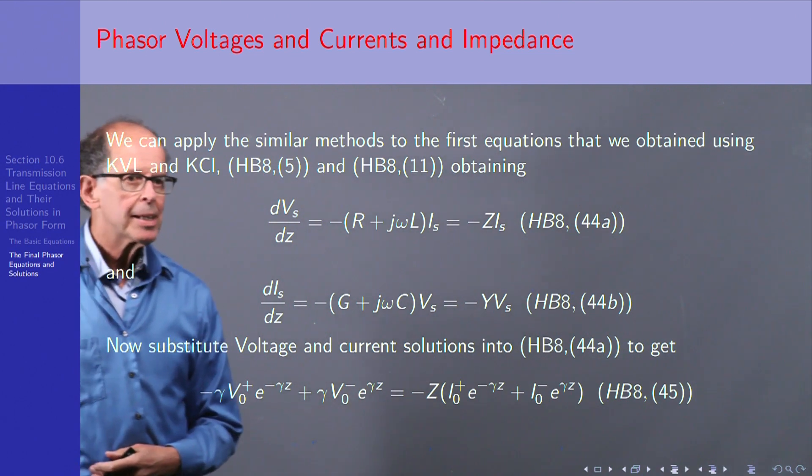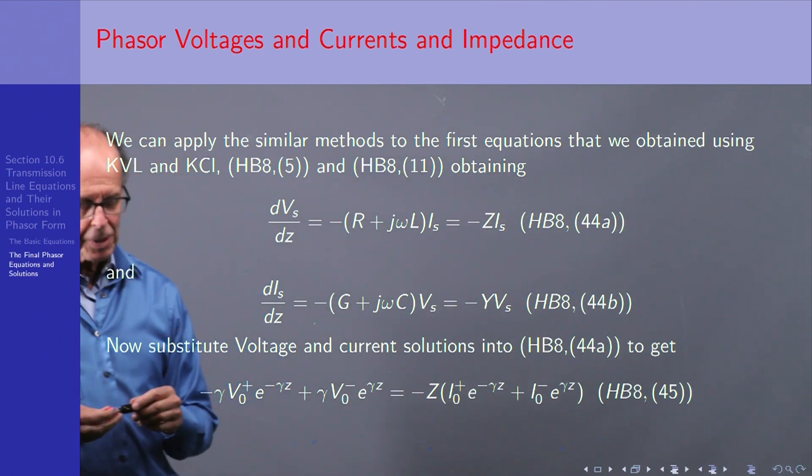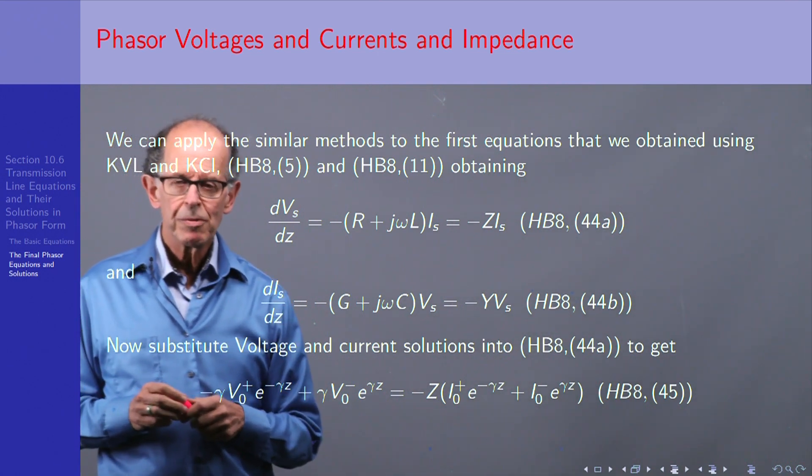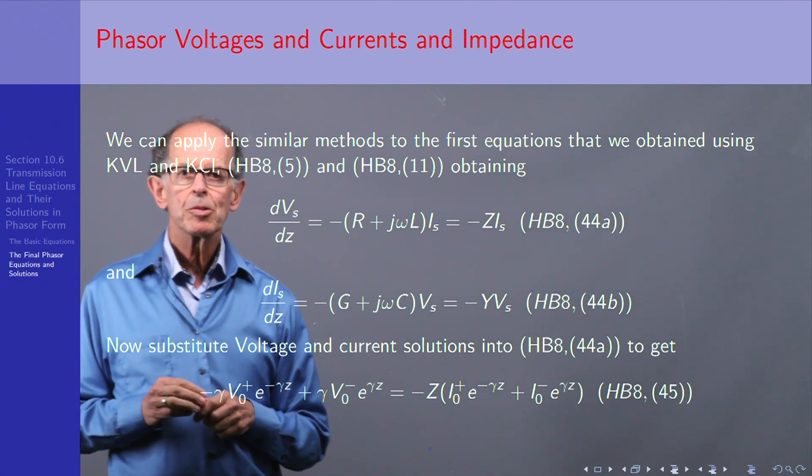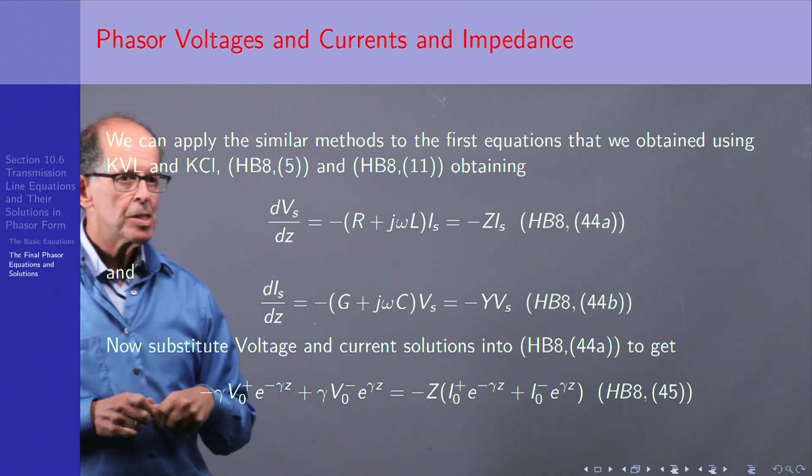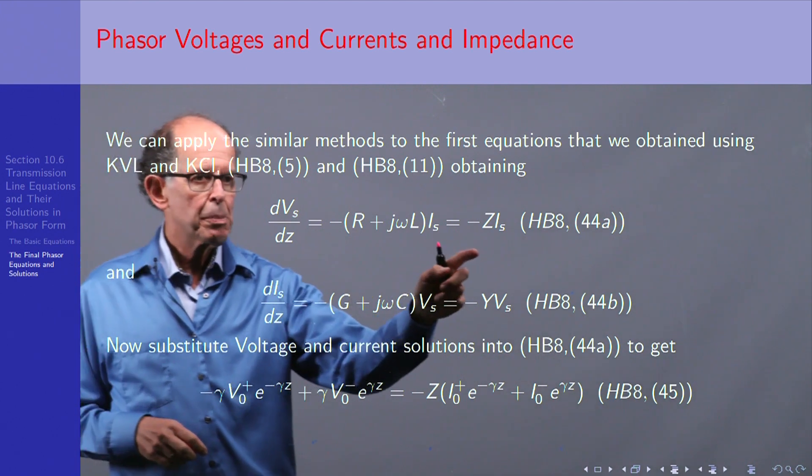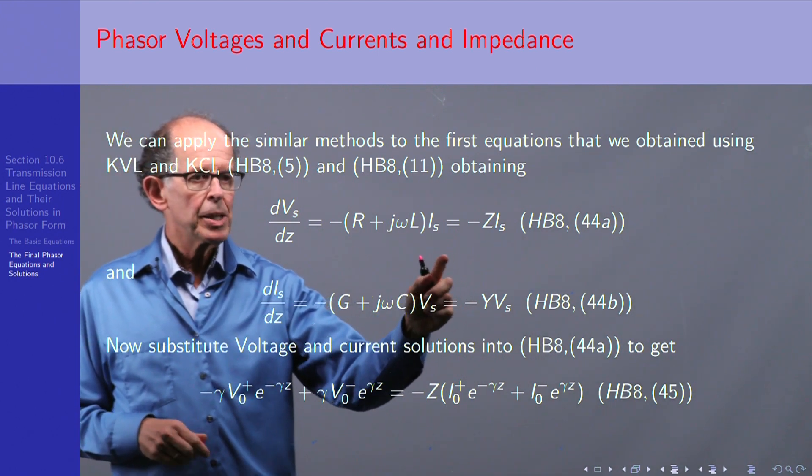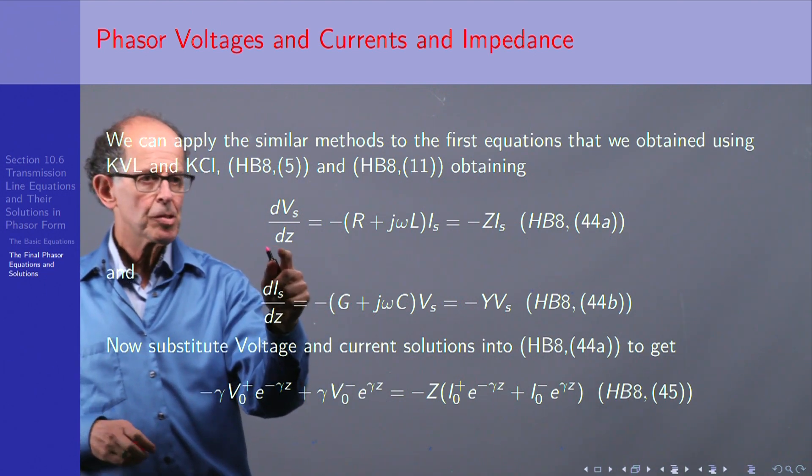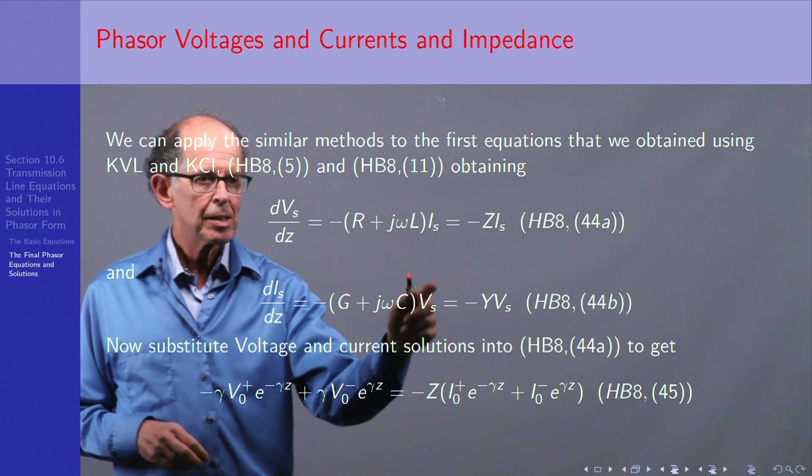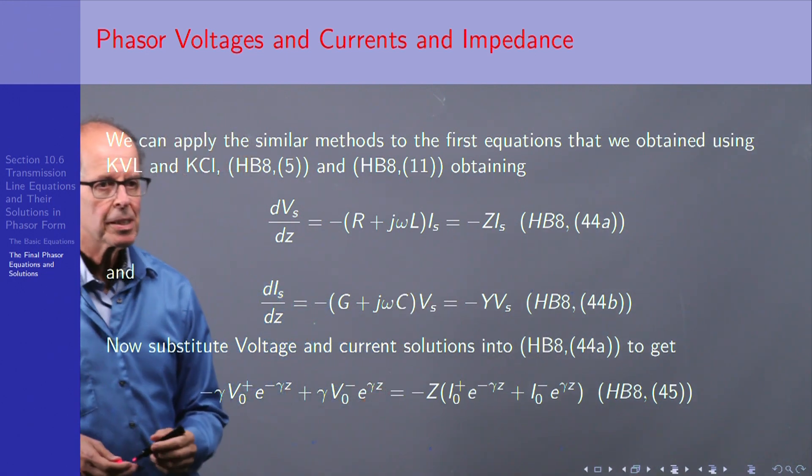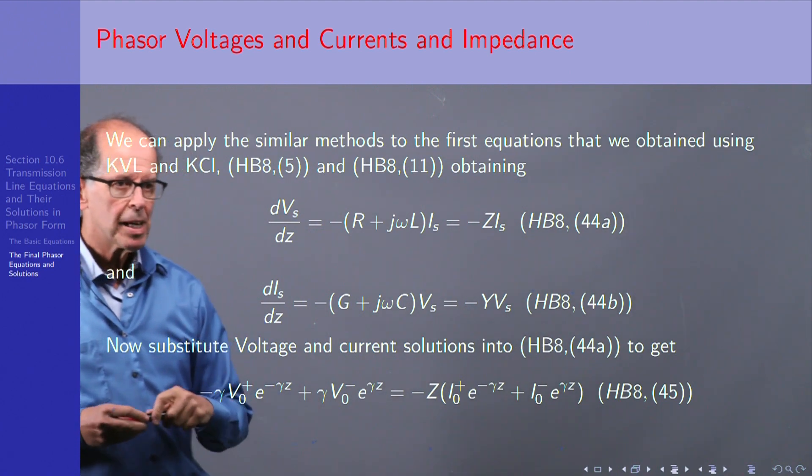Let's apply it. We can, from before, create the phasor equivalent equations of the ones we first looked at when we used KCL and KVL, and eliminate the time dependencies. And we get this pair of equations. Now, we know the solution. So let's plug in the voltage solution on this side, and the current solution on that side, and you get straightforwardly that just the appropriate either plus or minus gamma pops down.